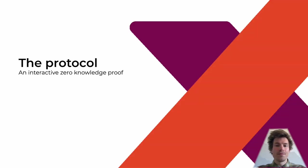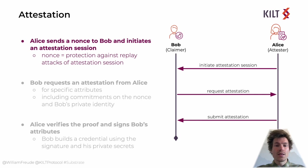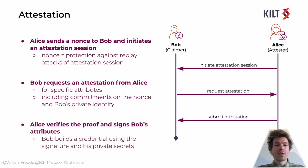Now we know what anonymous credentials are and can proceed to how a protocol could look when using them. In our case, it is an interactive one. We start with the attestation. Once again, we have Bob who wants to claim his possession of a cat to an attester Alice. Before Bob's claim can be attested, Alice has to initiate the attestation session by generating and sending a nonce to Bob that prevents replay attacks. Then he commits on the nonce with his private identity and sends his claim to Alice. Now Alice can validate the claim and if everything checks out, she signs and returns it back to Bob together with a witness. A witness is basically a large number and needed for revocation. Now Bob can generate his credential using the signed claim.